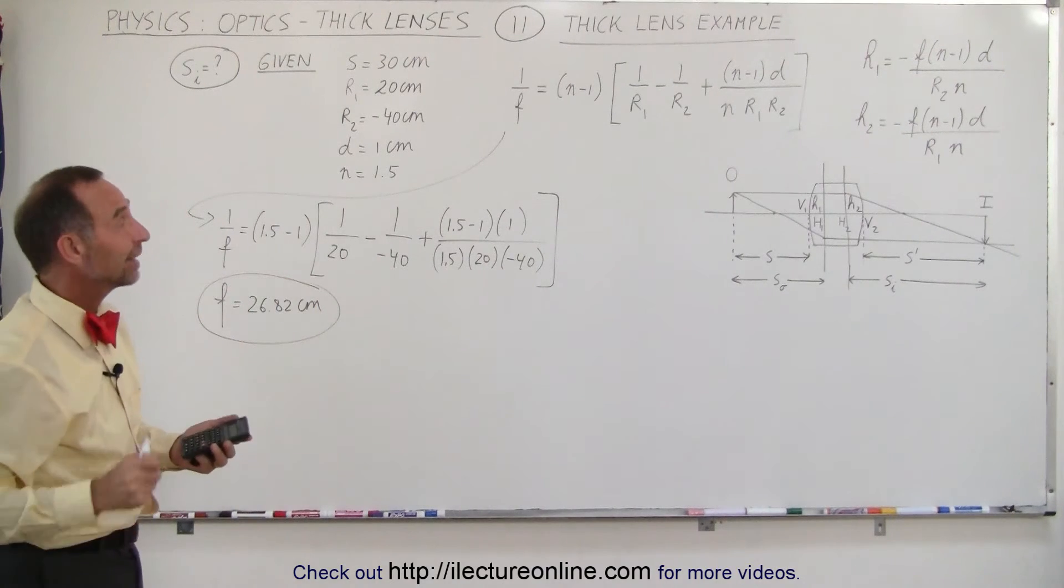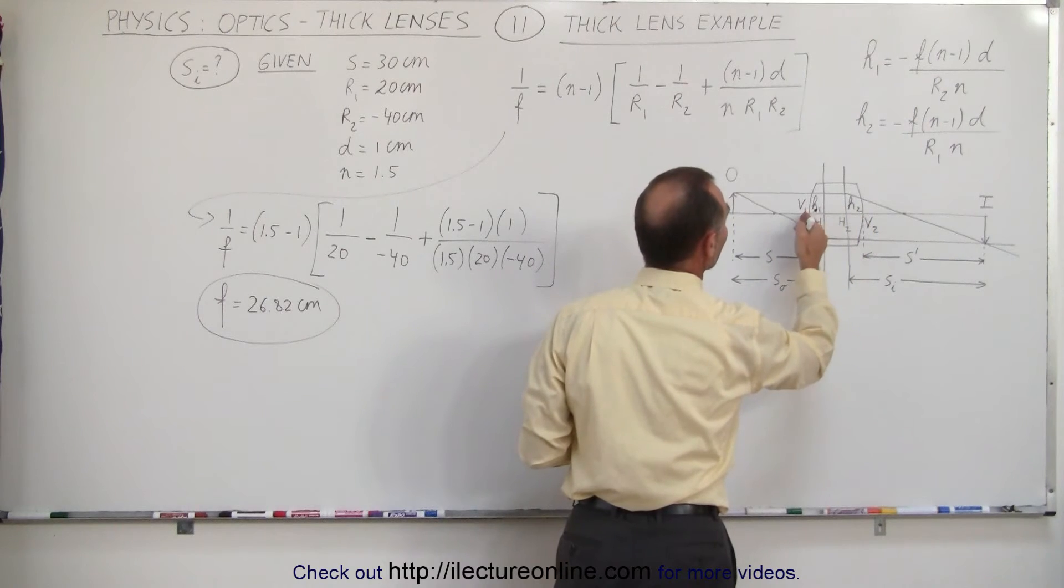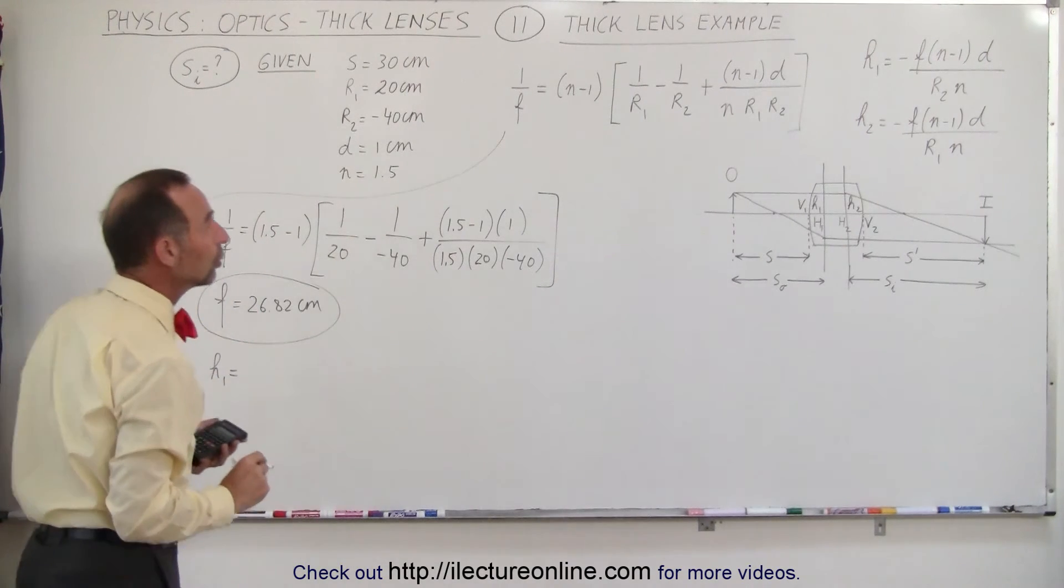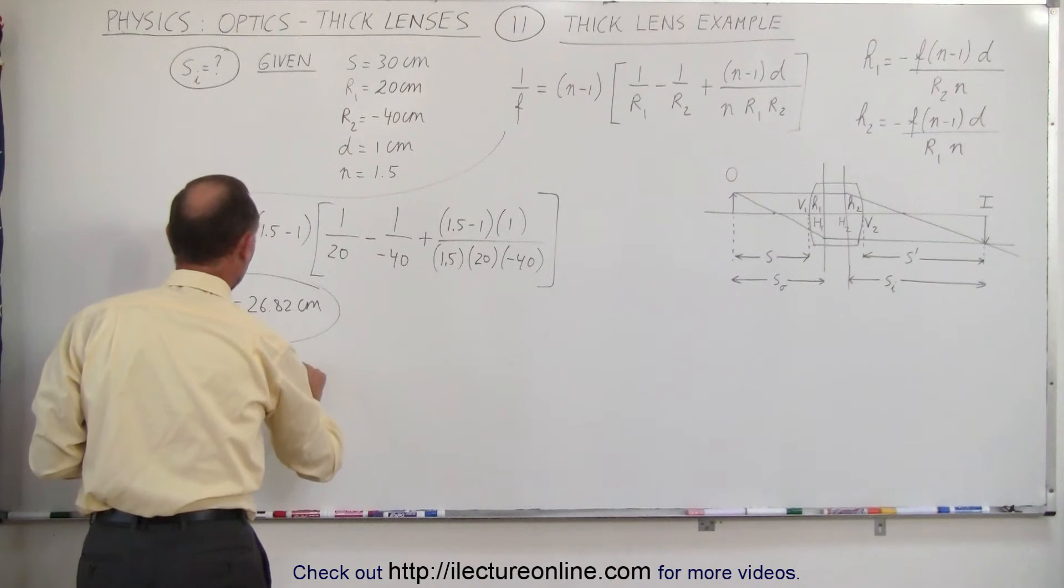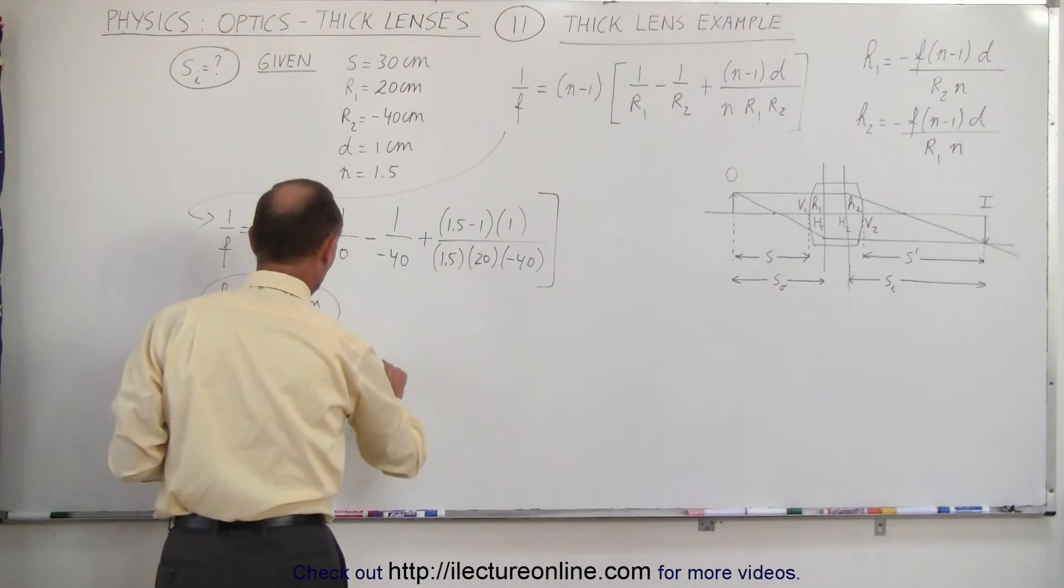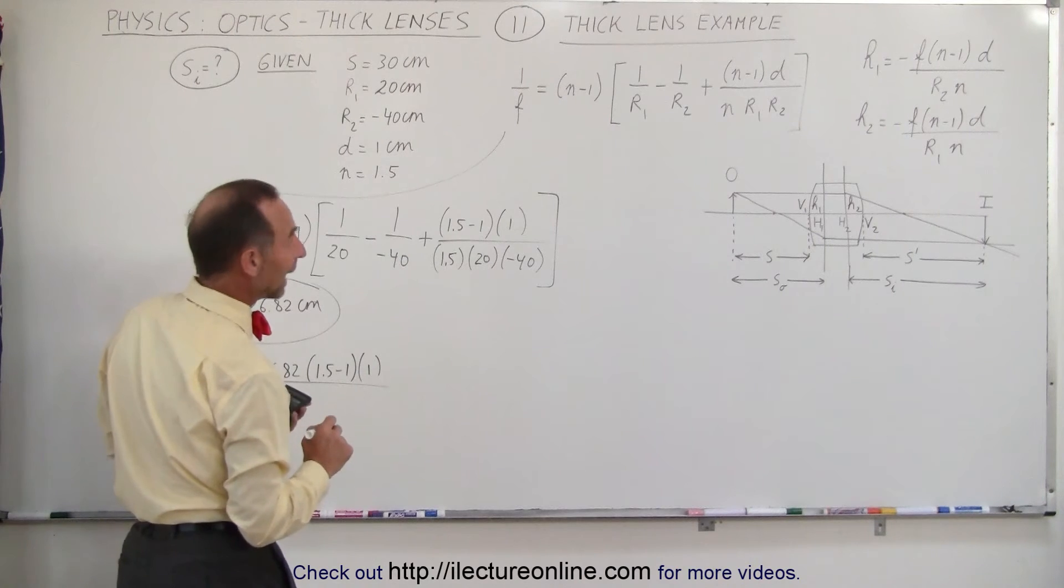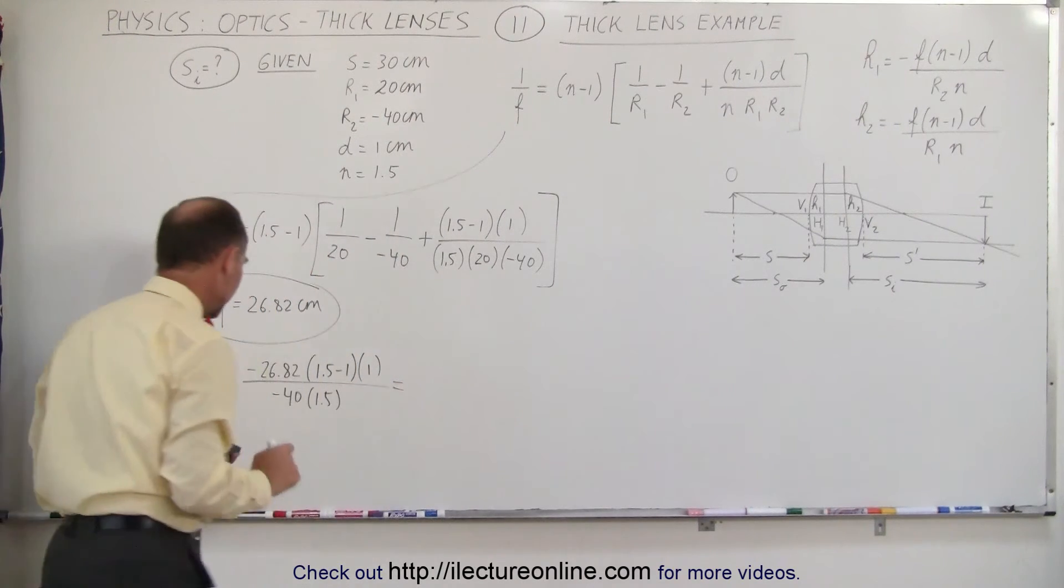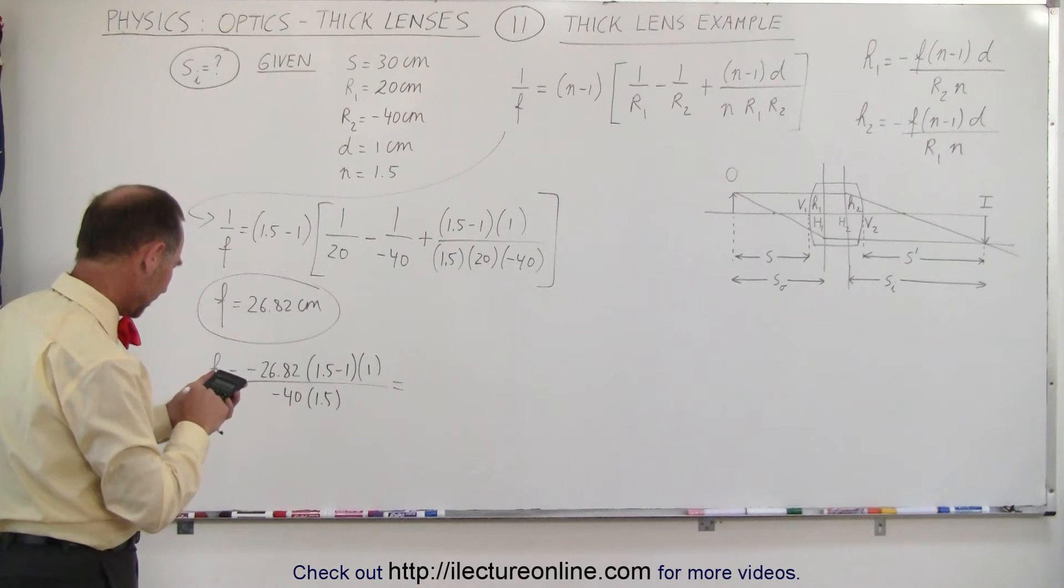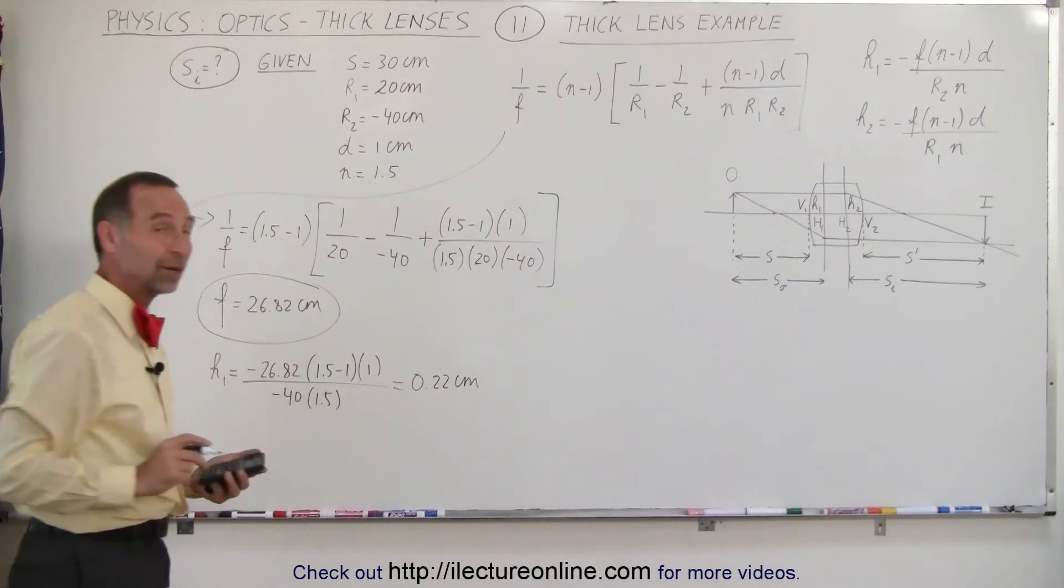Now that we have the focal length, we can find the distance from the back of the lens to the principal point right here, from the front lens to the principal point over there. So let's find h1 and h2. h1 is equal to, now that we have the focal length, it's minus 26.82, multiplied times 1.5 minus 1, multiplied times 1, divided by, that would be r2, which is a minus 40, times n, which is 1.5. So we have that 26.82 multiplied times 0.5, and divide by 60. And that gives me 0.22, and it's a positive 0.22 centimeters.